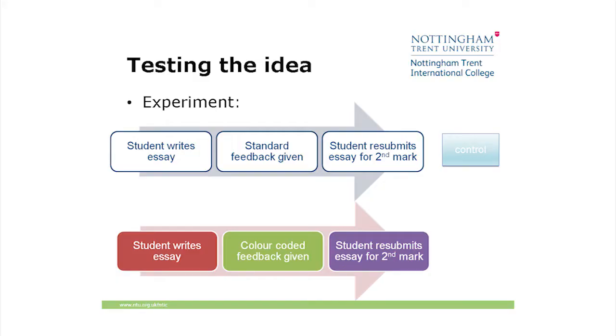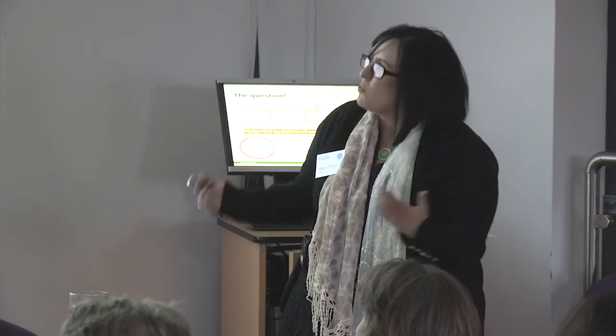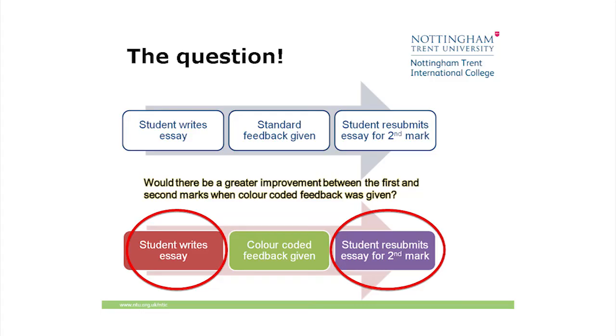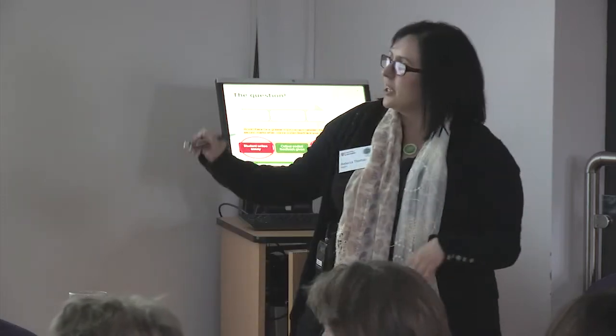So I performed an experiment. Standard — this is my control group — the student writes an essay, standard feedback is given, the student resubmits and gets a second mark. Then the student writes an essay, gets colour coded feedback, and resubmits for a second mark. What I'm really looking at is: is there going to be a greater improvement between the first and second marks when colour coded feedback is added? The answer is yes, by the way — otherwise this would be pointless. I'm looking at the difference between the first mark and the redraft, not between the two essays.